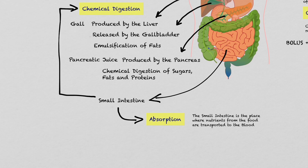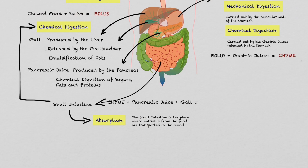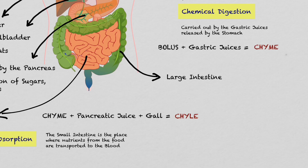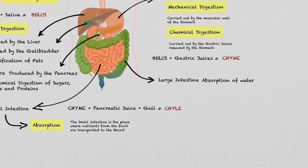The next step is carried out by the last part of the digestive system, called the colon or large intestine. In the large intestine there are two relevant processes. The first one is the absorption of water. The second one is defecation, which is the elimination of non-digested material. The food that has not been absorbed or digested is released to the exterior through the anus.